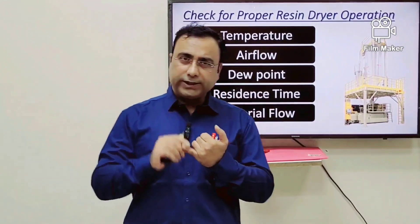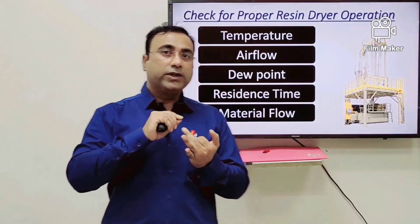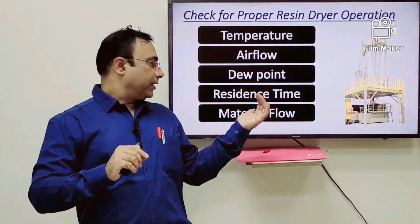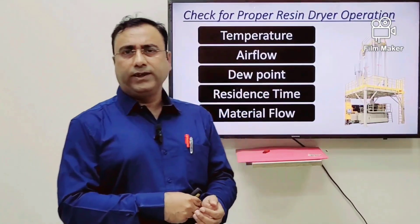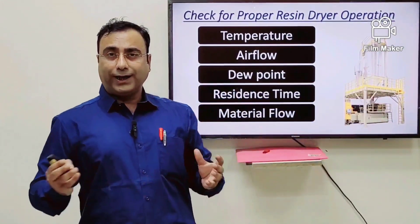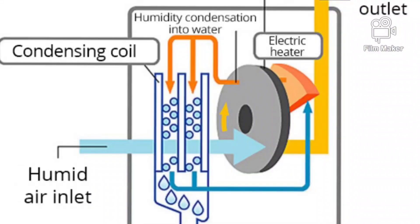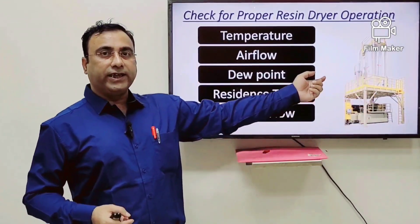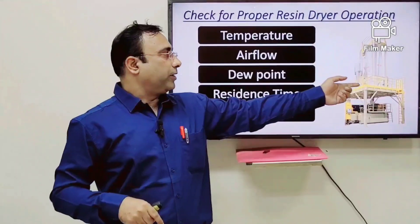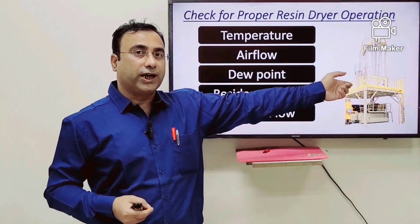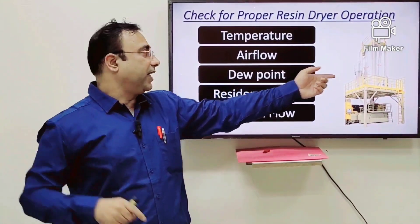To eliminate moisture, there are five steps: temperature, air flow, dew point measurement, residence time, and material flow. The first three are most important. To correct the PET resin dryer, air comes from the environment, is first dried to get dry air, then heated and flowed into the PET resin hopper. Material comes in from the top and air flows top to bottom — ensure the air flow is correct as designed.